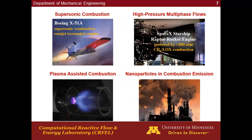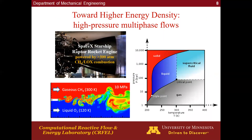Now let's talk about the second area: high-pressure multi-phase flows. The motivation for this area is that rocket engines, diesel engines, and next-generation gas turbines all operate at extremely high pressure. For example, the SpaceX Starship Raptor rocket engine operates at more than 300 atm. Under such conditions, you can enter the so-called thermodynamically supercritical region. Here is an example of our simulation for liquid oxygen mixing and combustion for such a rocket engine.